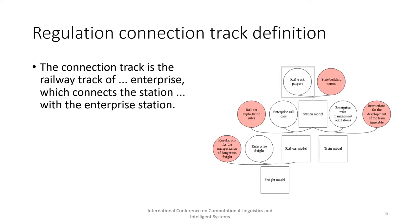Let's consider parts of ontologies addressing some technological processes, relating to several sub-ontologies and accordingly several information subsystems of the unified automated control system of the freight traffic of UZE. Speaking about the station model, we will consider three models.